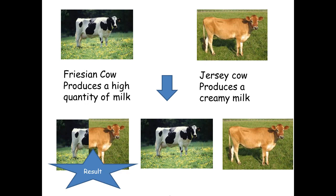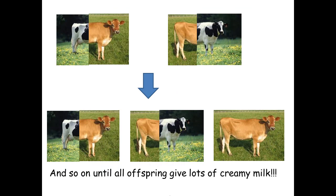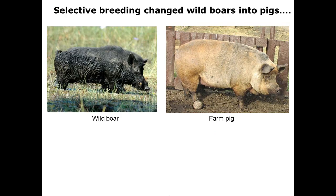The result of crossing the Friesian and Jersey cows will be that some offspring will produce high quantity of creamy milk. Only this offspring — the one able to produce high quantity of creamy milk — will be selected for the next breeding. This will be carried on, selecting just the offspring that produce lots of creamy milk, until all offspring can produce a high quantity of creamy milk.